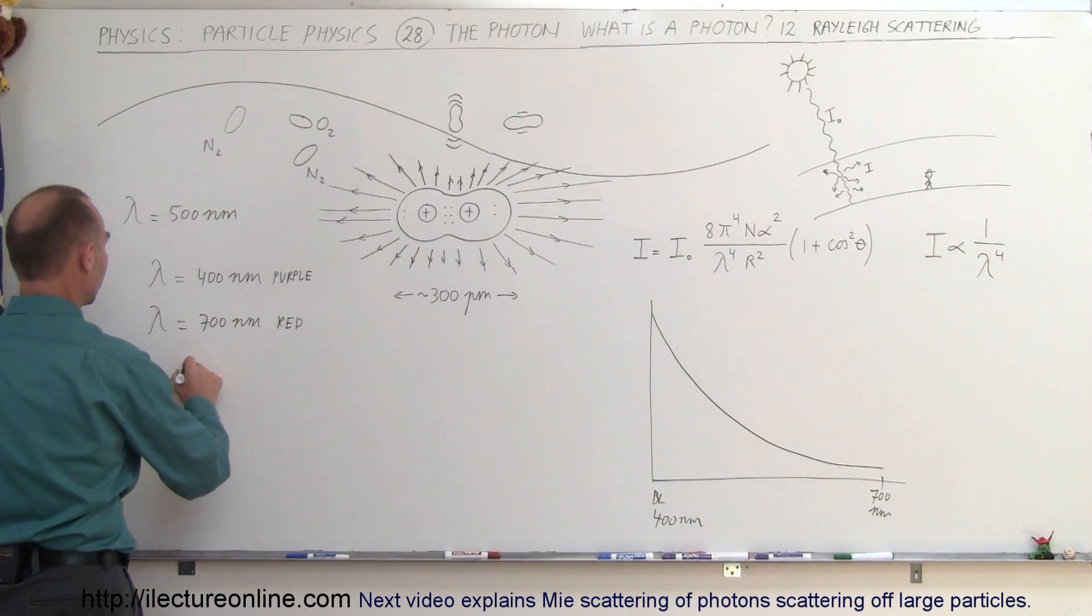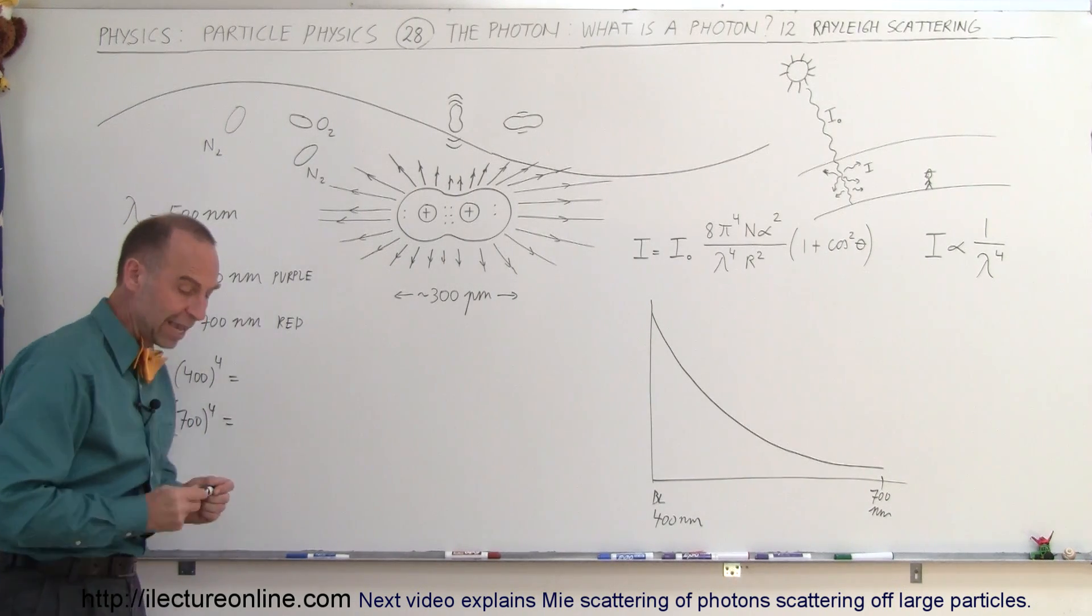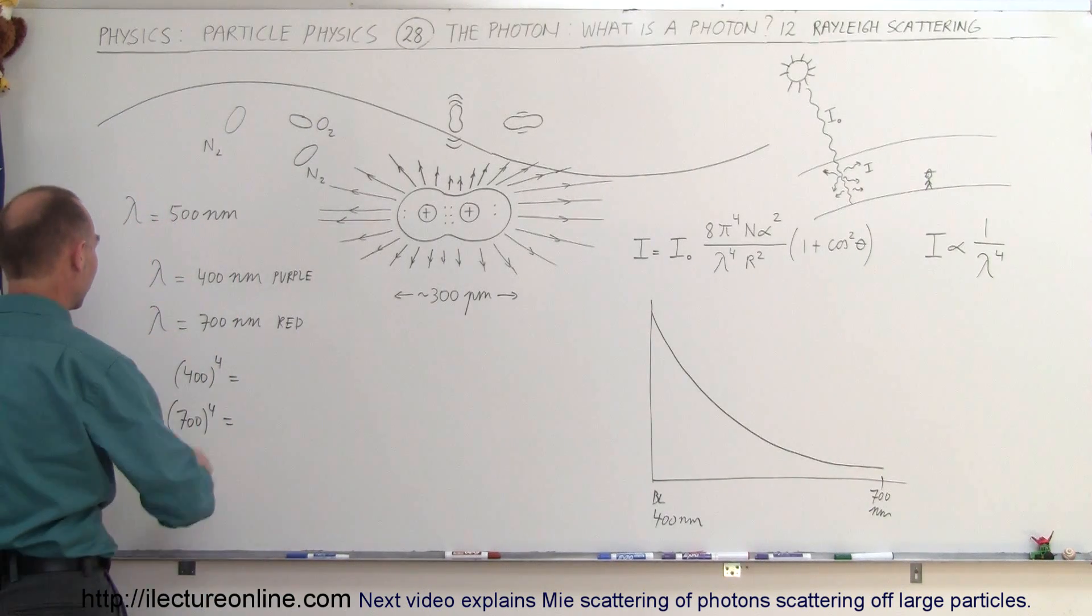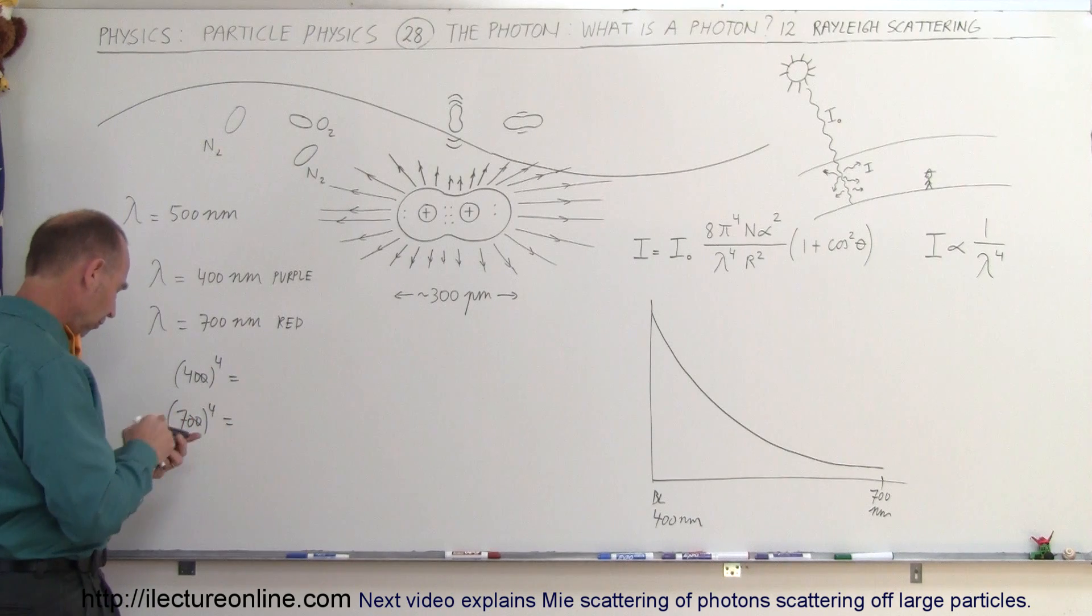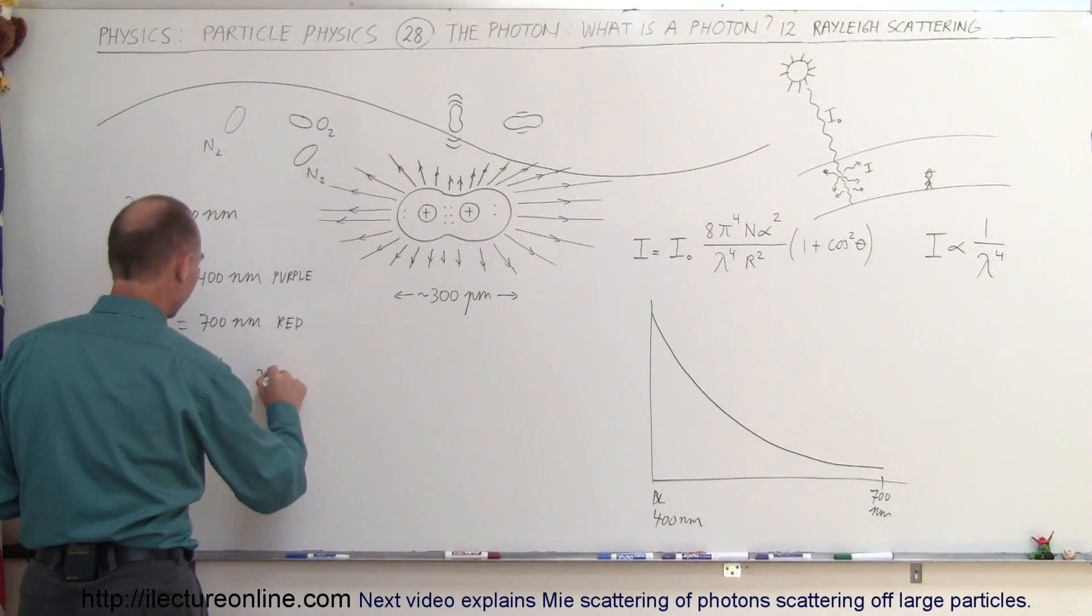Let's say that we take 400 to the 4th power and we take 700 to the 4th power and then we'll take that ratio and see what we get. Actually we don't have to do 400, we can go 4 by itself. We can get rid of zeros because we just want to care about the ratio. So 4 to the 4th power...